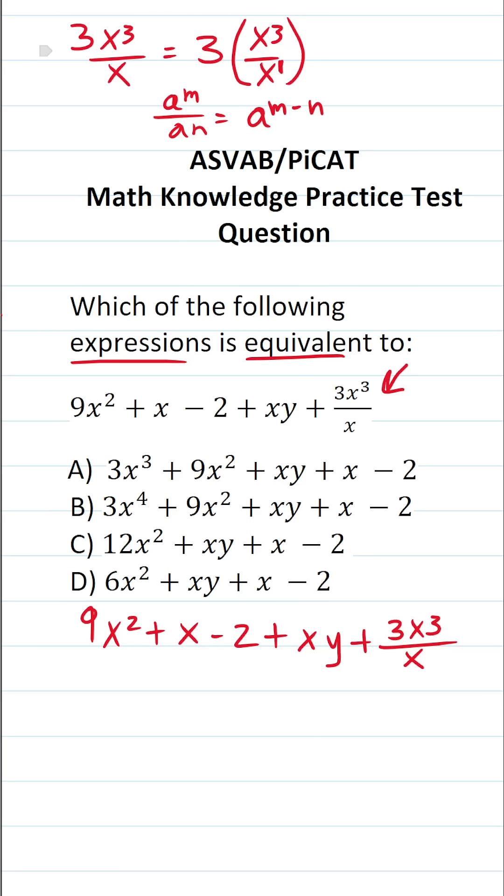Technically, this x is raised to the first power. So this becomes 3 times x to the 3 minus 1. So this becomes 3 times, 3 minus 1 is 2, so 3 times x squared, which is just 3x squared. All right, so this term can be simplified to simply be 3x squared.